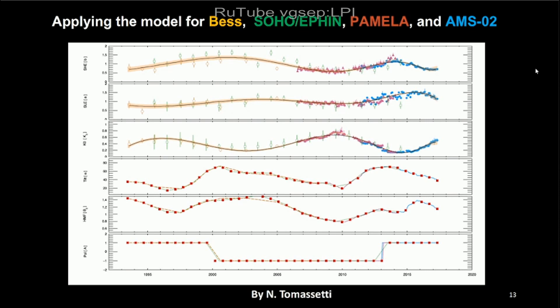To cover more solar cycles we applied BESS and SOHO data — not monthly, but going back to the 1990s — in order to see how propagation time evolved over a longer period. These provide three additional parameters found by fitting, alongside the PAMELA and AMS data.